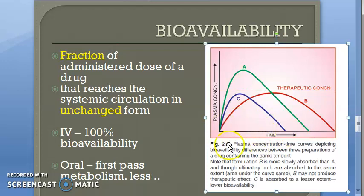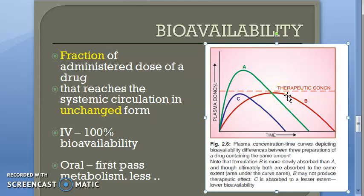The graph shows the same drug given in the same amount but in different preparations. Preparation A achieves a good plasma concentration, so its bioavailability is higher. The other two preparations do not even reach the therapeutic concentration. If you didn't understand the diagram, leave it — no issue.